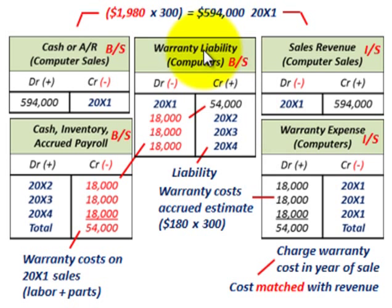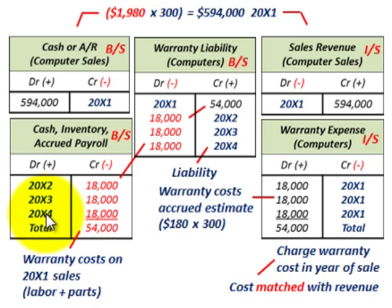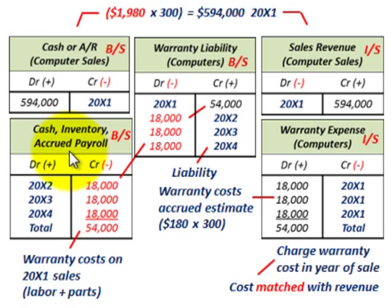Going back to the warranty liability of $54,000 set up on the balance sheet: each year from 20x2 through 20x4, we reduce this warranty liability by $18,000 per year using the straight-line method. We debit the warranty liability by $18,000 and credit cash, inventory, or accrued payables for the actual warranty costs incurred. Total warranty liability over the three years: $54,000.